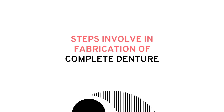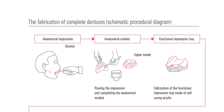In the first step, a primary impression is made by the dentist after choosing the right impression material and the right type and size of stock tray. This step is called the primary impression. Thereafter, the impression is poured to prepare a primary cast, which is usually made with dental plaster.